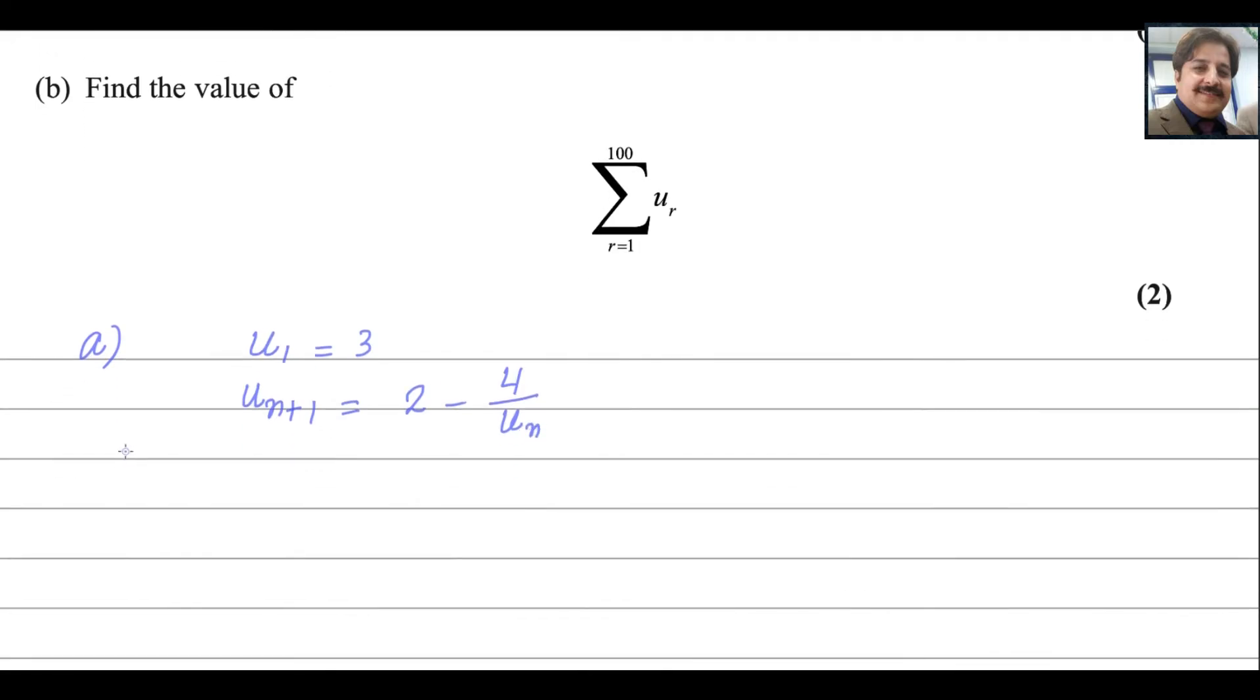If you use the value of n as 1, we will get U2 for sure. So it will be U2, 2 minus 4 over n is 1. So it will be U1 and we get the answer for it 2 minus 4 over 3. If you solve it, you get the answer 6 minus 4, 2 over 3.